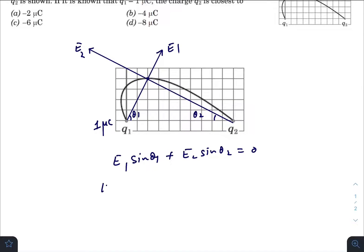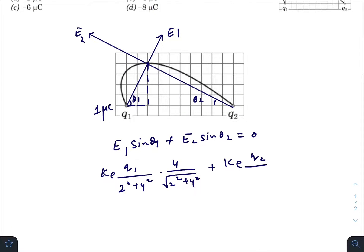So E1 is k q1 divided by this distance squared. So there are two units in the horizontal, four on the vertical, so 2 squared plus 4 squared, sine theta 1 will be 4 divided by root over 2 squared plus 4 squared. Plus E2 will be k e q2 divided by 1, 2, 3, 4, 5, 6, 7, 8, so 8 squared plus 4 squared times 4 divided by root over 8 squared plus 4 squared. Sine theta 2 will be, theta 2 will be zero.